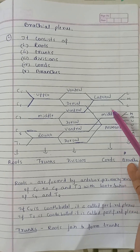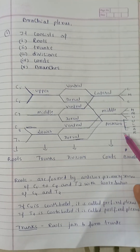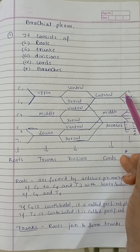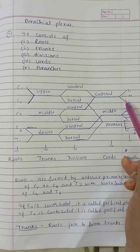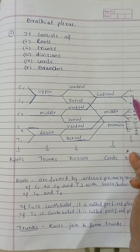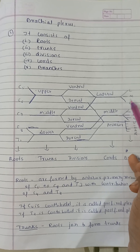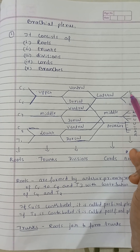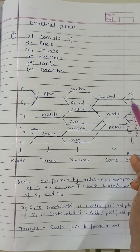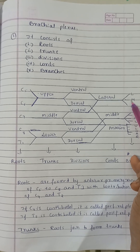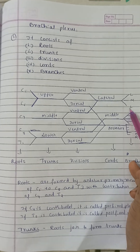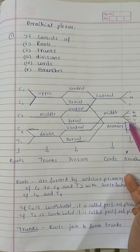These cords give rise to branches. The lateral cord gives rise to three branches. The mnemonic is LML: L stands for lateral pectoral nerve, M stands for musculocutaneous nerve, and L stands for the lateral root of the median nerve.